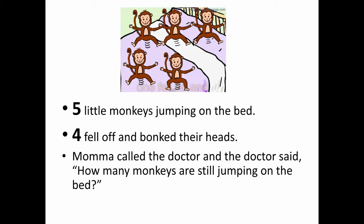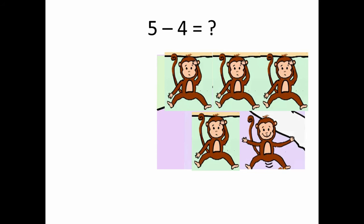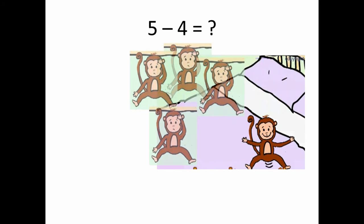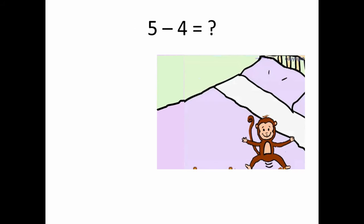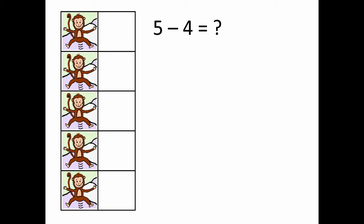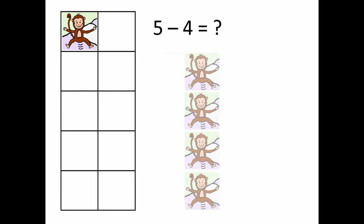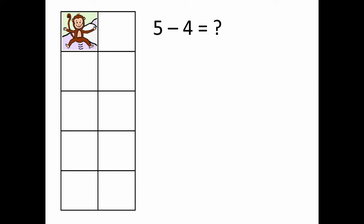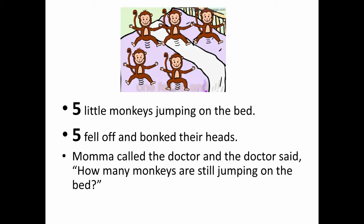Five little monkeys jumping on the bed, four fell off and bonked their heads. Mama called the doctor and the doctor said, how many monkeys are still jumping on the bed? If you have five fingers and fold four of them down, how many are left? Let's see with the monkeys — five monkeys and four fall off. You're right — five minus four is the same as one.